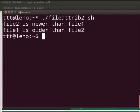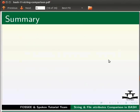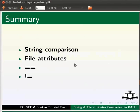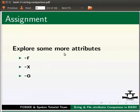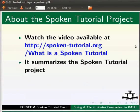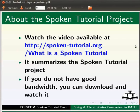This brings us to the end of this tutorial. Let us summarize. In this tutorial we learnt string comparison using ==, !=, and file attributes -f, -s, -w, -nt, and -ot. As an assignment, explore some more attributes: -r, -x, and -o. Watch the video available at the link shown below, which summarizes the spoken tutorial project. If you do not have good bandwidth, you can download and watch it.